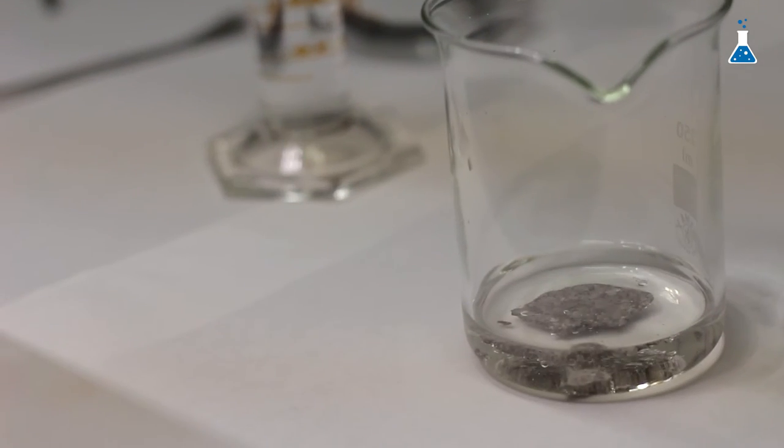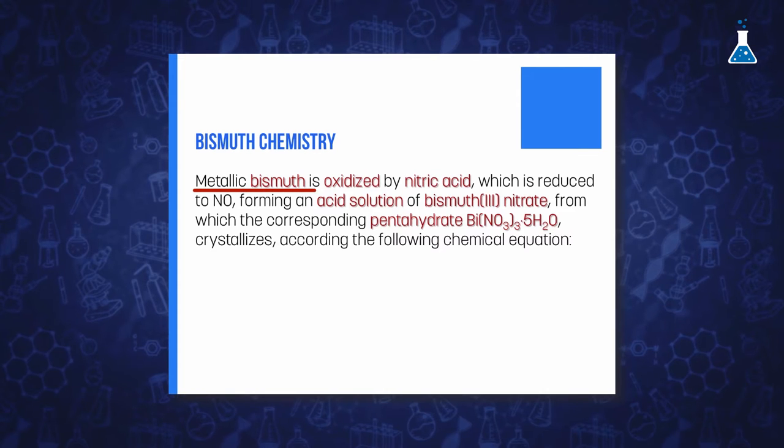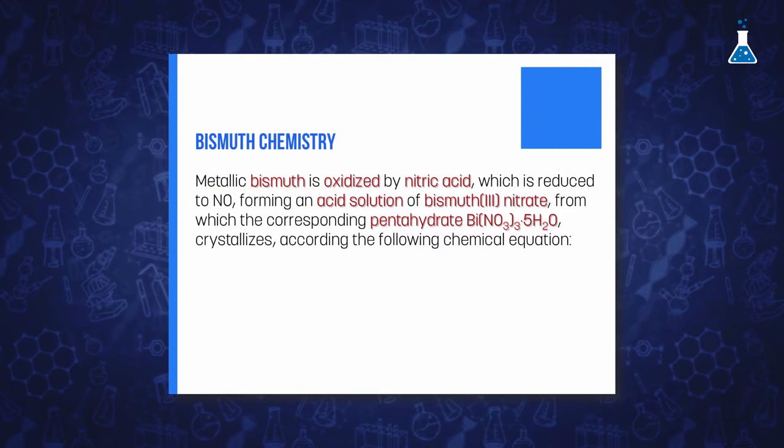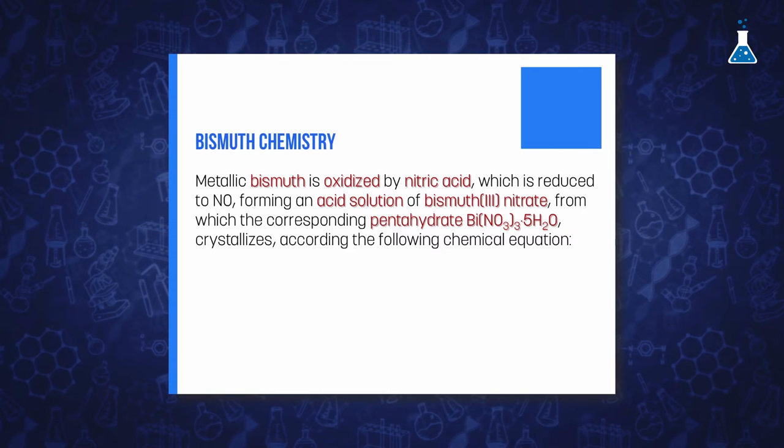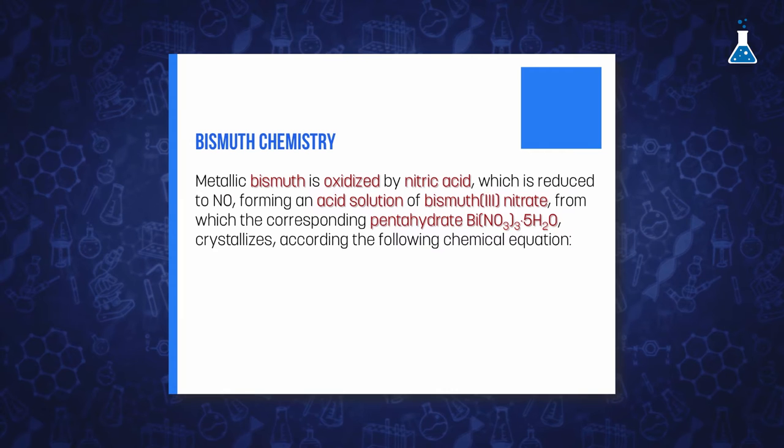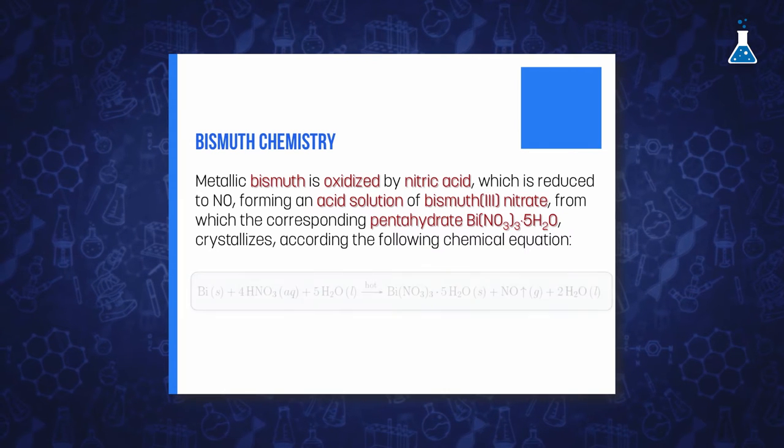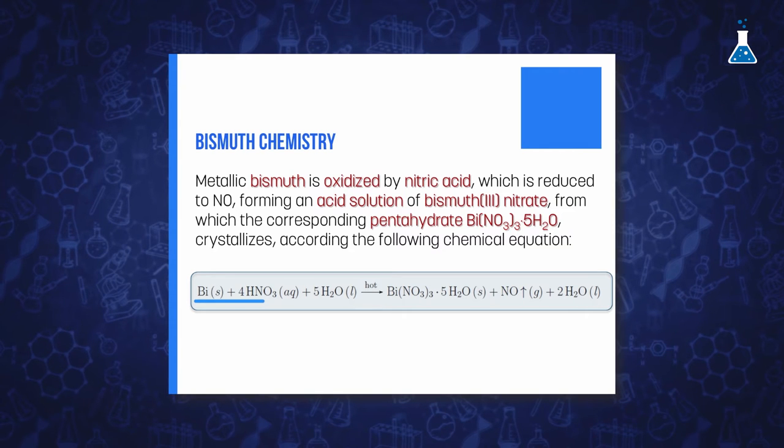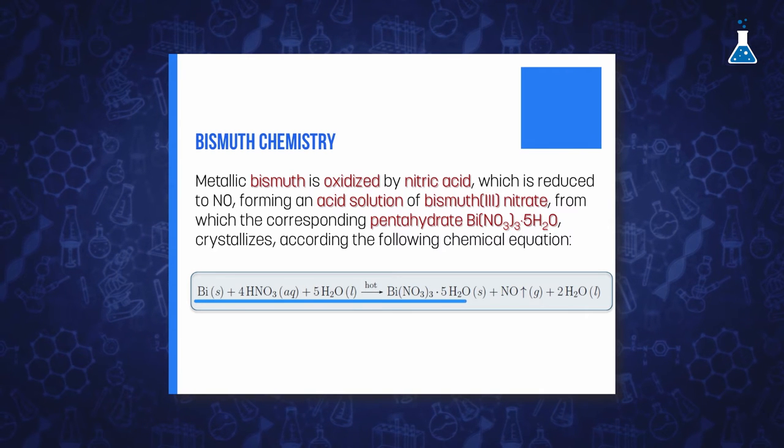This reagent is added in excess to ensure that all bismuth metal reacts. As we can see, the redox reaction takes place where the bismuth is oxidized to bismuth 3+ by the nitrate ions, which are reduced to NO, that is a colorless gas. So, the complete redox reaction that takes place in dilute nitric acid is shown.